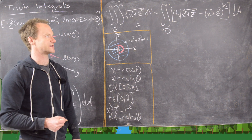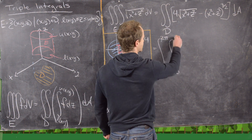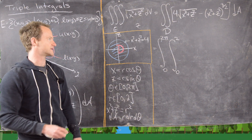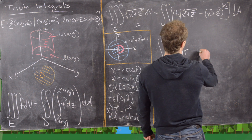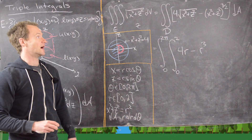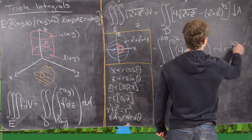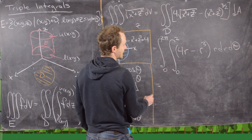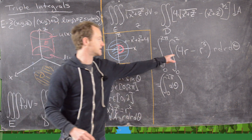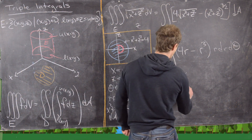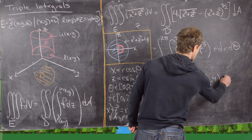Our integral becomes the integral from 0 to 2π (outer, in θ) times the integral from 0 to 2 (inner, in r) of 4·√(r²) minus (r²)^(3/2), times r dr dθ, which simplifies to 4r² minus r⁴, times r dr dθ. Since the integrand depends only on r, we can separate: 2π times the integral from 0 to 2 of (4r² − r⁴) dr.